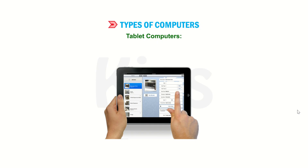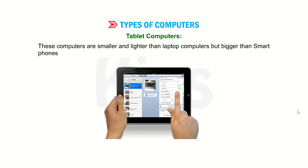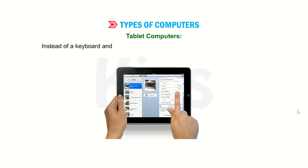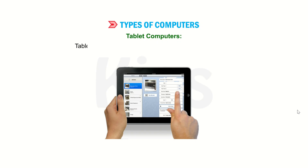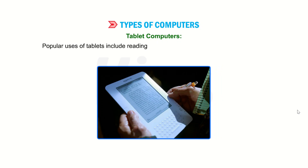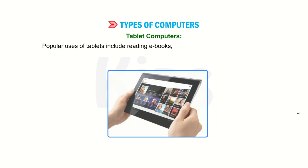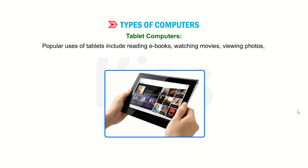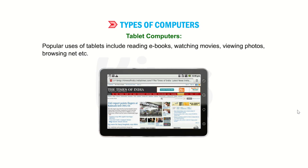Tablet computers are smaller and lighter than laptop computers but bigger than smartphones. Instead of a keyboard and mouse, tablets use a touch-sensitive screen for typing and navigation. Tablets generally have a screen size between 7 to 10 inches. Popular uses of tablets include reading e-books, watching movies, viewing photos, browsing the net, etc.